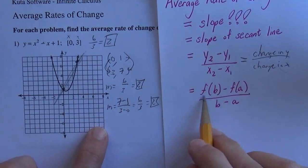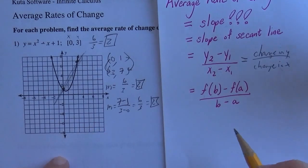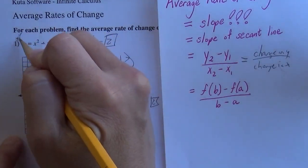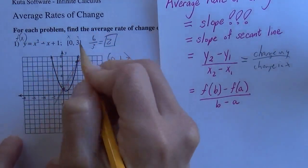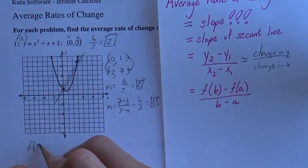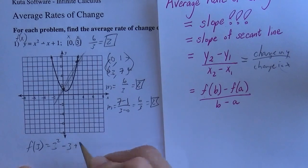And then this formula is f of b minus f of a over b minus a. Because this is just like f of x. So f of b would have been f of 3, which would have been 3 squared minus 3 plus 1